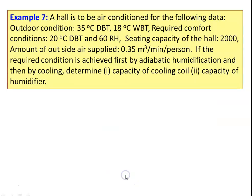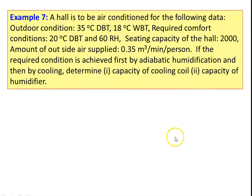Example number 7: a hall to be air conditioned with outdoor conditions 35 degree Celsius dry bulb temperature and 18 degree Celsius wet bulb temperature. Required comfort condition: 20 degree Celsius dry bulb temperature and 60 percent relative humidity. Seating capacity is 2000, amount of outside air supplied is 0.35 cubic meter per minute per person. The required condition is achieved by adiabatic humidification and then cooling. Determine capacity of the cooling coil and capacity of the humidifier.